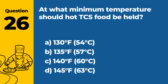Question 49: What are the consequences of not having an adequate hand-washing station? Answer: A. Increased risk of foodborne illness due to potential contamination. Not having an adequate hand-washing station can lead to an increased risk of foodborne illness, as it hampers proper hand hygiene practices, a critical aspect of preventing contamination.